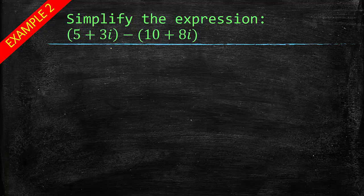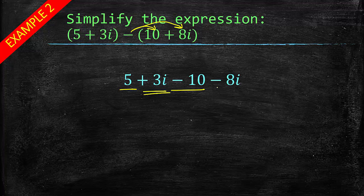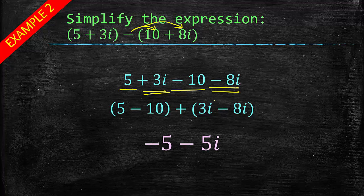Again, simplify the expression. This is addition or subtraction. So now we can't just remove the parentheses. We actually have to distribute this negative sign to both terms inside. When we do that, we've still got the 5 plus 3i out in front, but this negative sign becomes negative 10 minus 8i. So now we can lose the parentheses. Again, take the numbers and the sign to the left of them. So we have a 5 and a negative 10, and 3i minus 8i. 5 minus 10 is negative 5. 3i minus 8i is negative 5i. So we have negative 5 minus 5i for your answer.